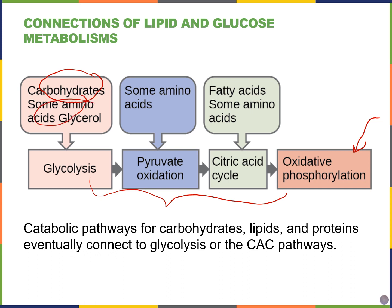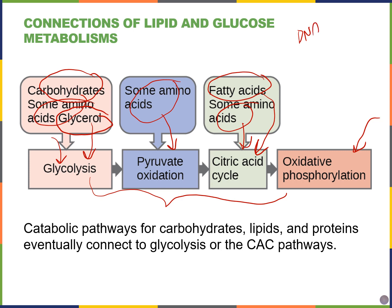Amino acids can be modified and enter glycolysis. Glycerol — which along with three fatty acids makes up triglycerides — can also enter glycolysis. Amino acids can enter the citric acid cycle or pyruvate oxidation, and fatty acids can be metabolized and enter the citric acid cycle as well. Even nucleic acids like DNA and RNA can be modified to enter different components of the citric acid cycle when the body is desperate for energy.